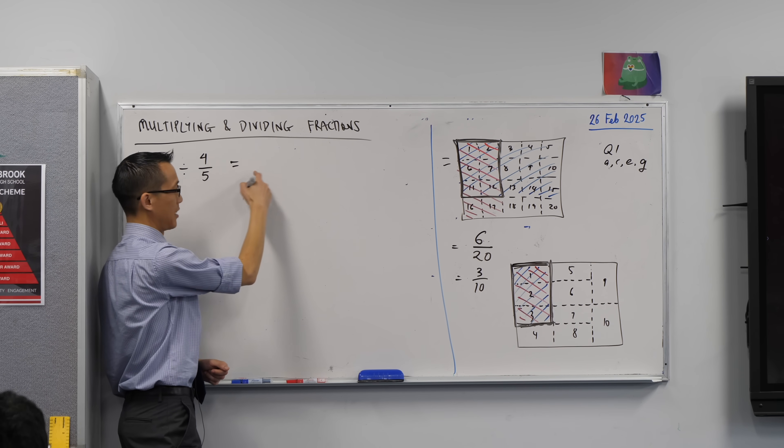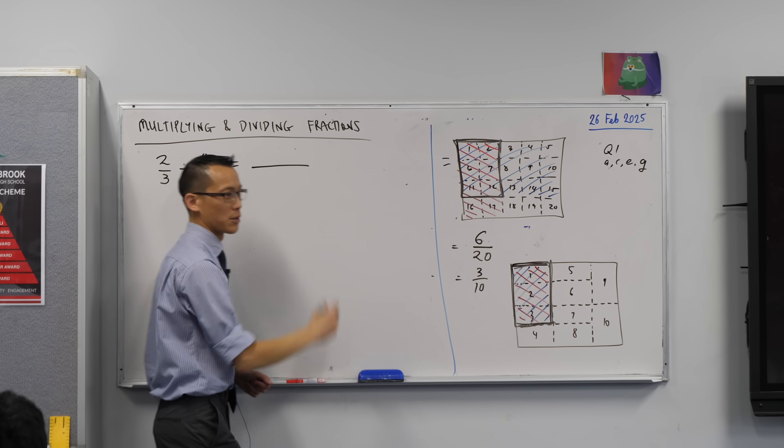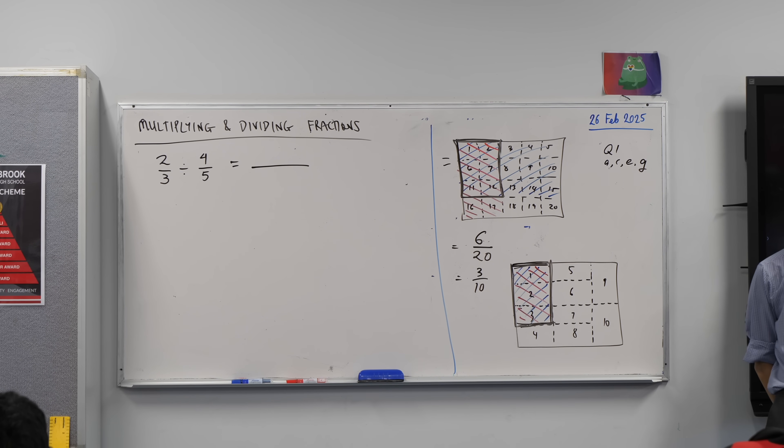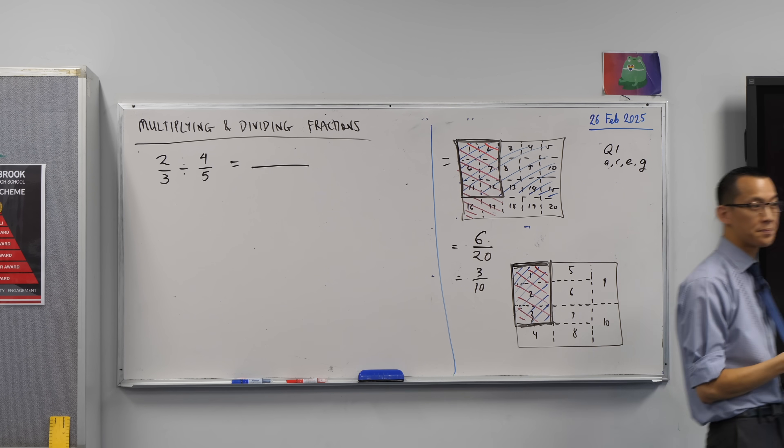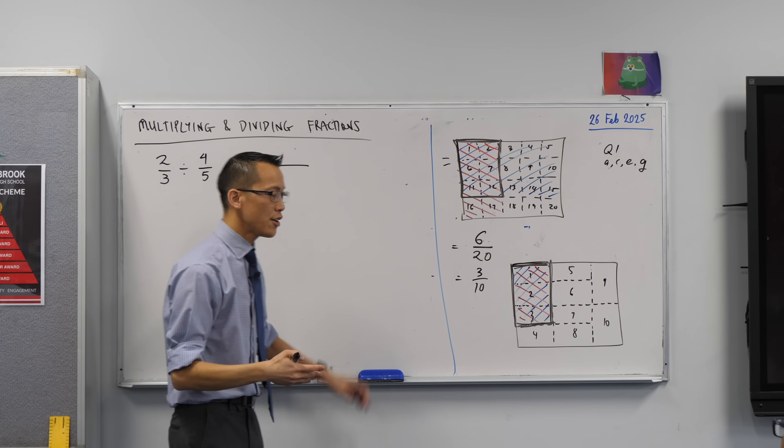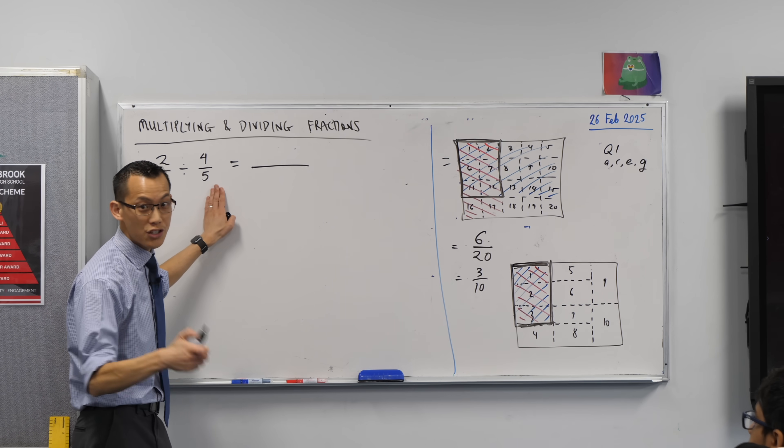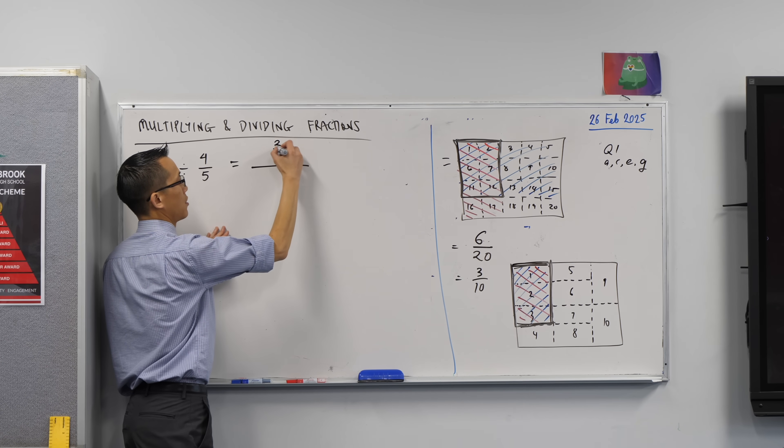I'm not going to write that as my next line of working. I'm going to do something else. Now you can pick up your pens. If you've already written two thirds divided by four fifths, I want to explain to you why it is that we change it into multiplication and we do the reciprocal thing. Okay, here's how we're going to do it. I'm going to write this instead of as something divided by something else. I'm going to write it as one big gigantic fraction, like so.